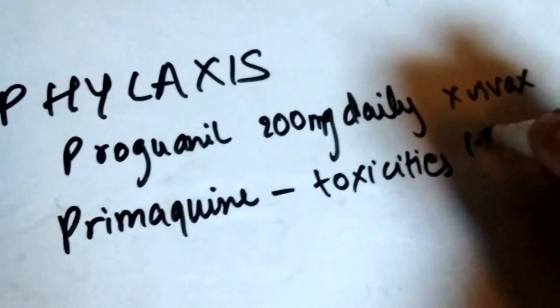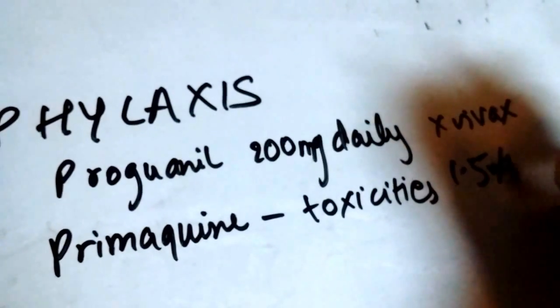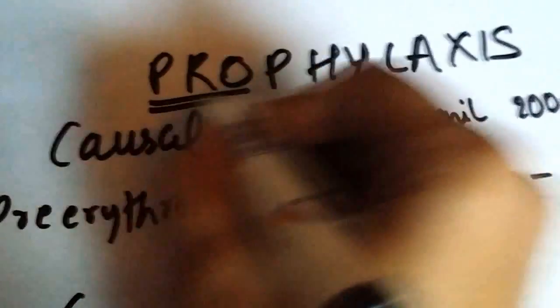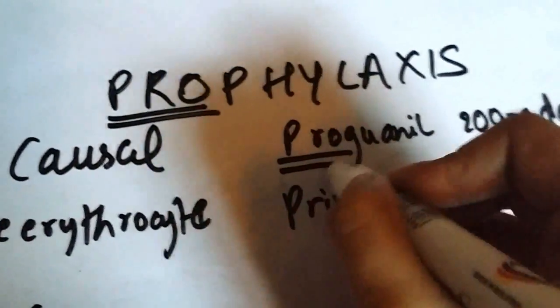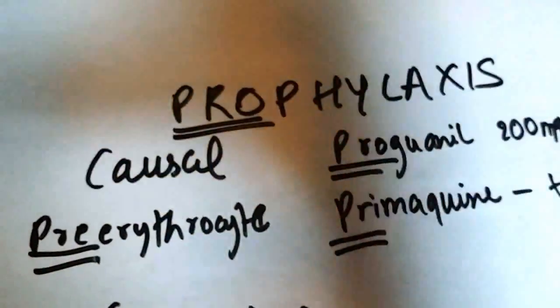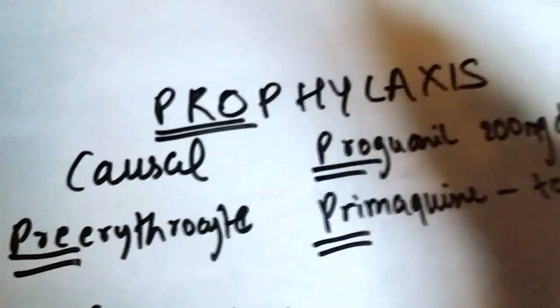The mnemonic for prophylaxis is proguanil, primaquine, pre-erythrocytic. You see how the PR kind of repeats in the mnemonic.